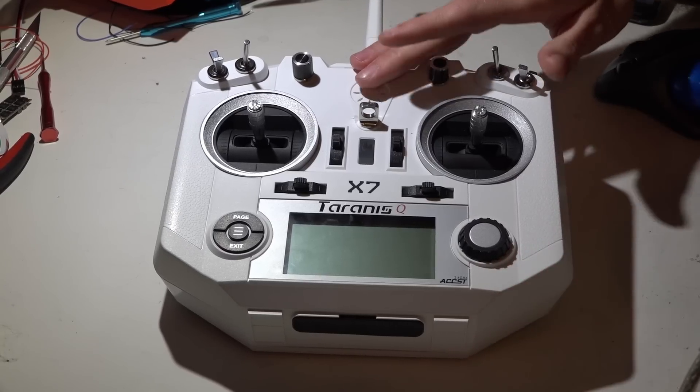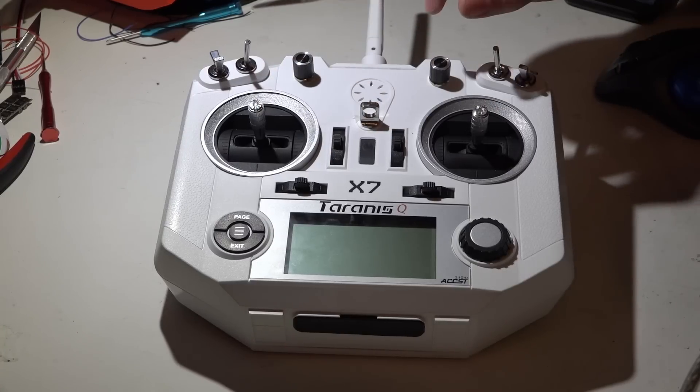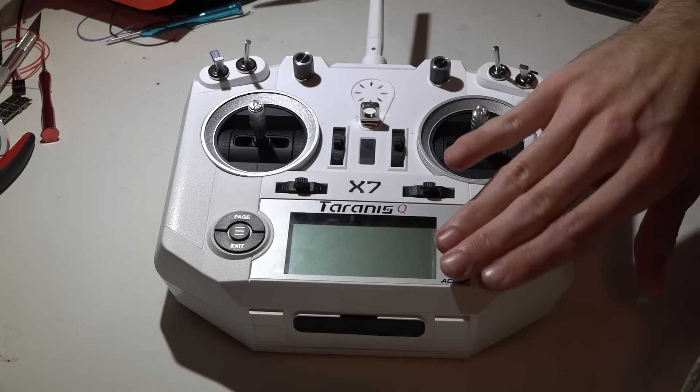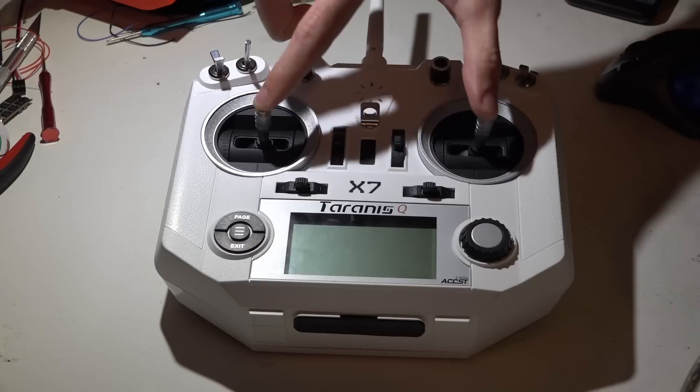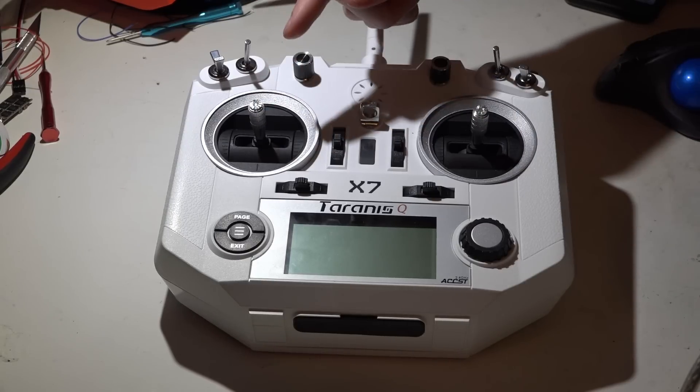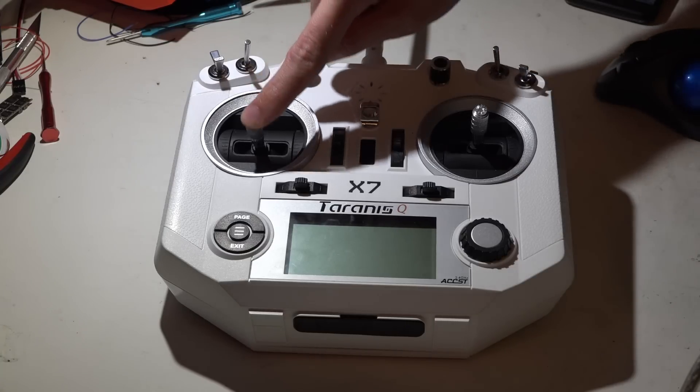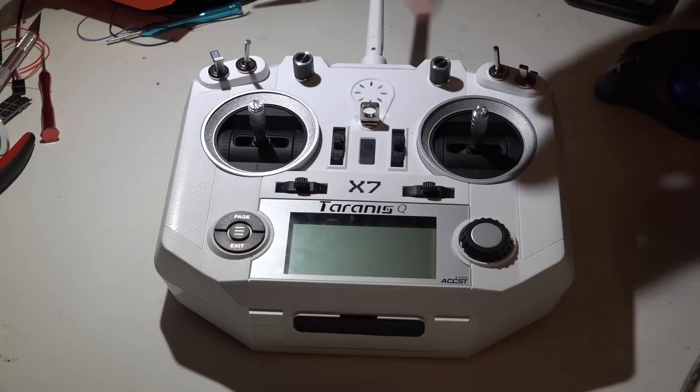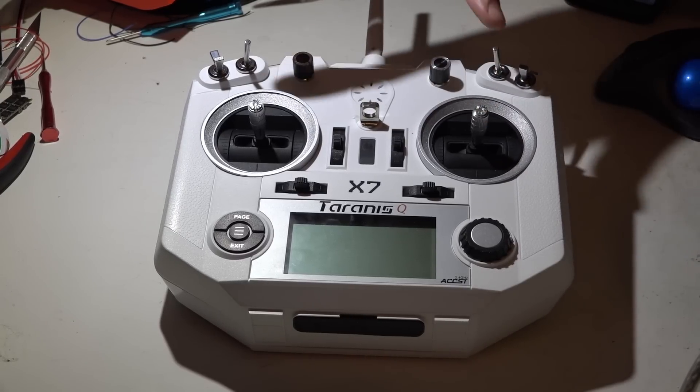So in this video, before we go any further, the first thing we need to do is set up the sticks. I showed you how you can choose mode 1 or mode 2 through the menu, but the problem is the sticks self-center on both sides. So we need to pick and choose one of these and disable the self-centering, and for most of us it's going to be this one on the left, which will be throttle for mode 2. But even if you do want to use this one as your throttle, the process is going to be exactly the same.